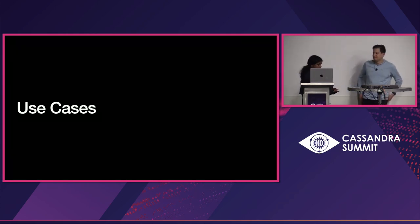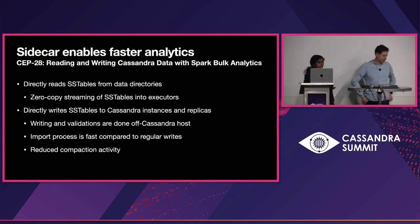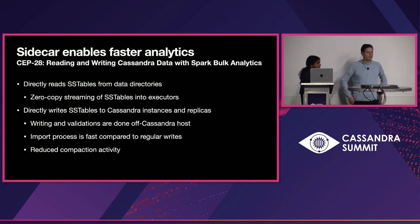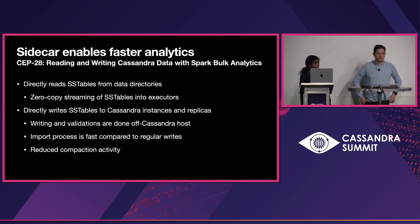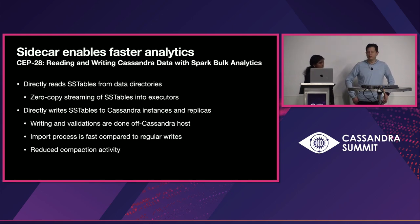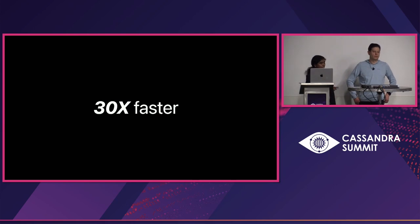Sidecar enables faster analytics. Through CEP28, an analytics project was introduced in open source for bulk reading and writing data to and from Cassandra. Sidecar provides REST APIs that can stream data directly from data directories using a zero-copy streaming technique without loading data in memory. It also has REST APIs for importing SSTables into the data directories after performing validations.